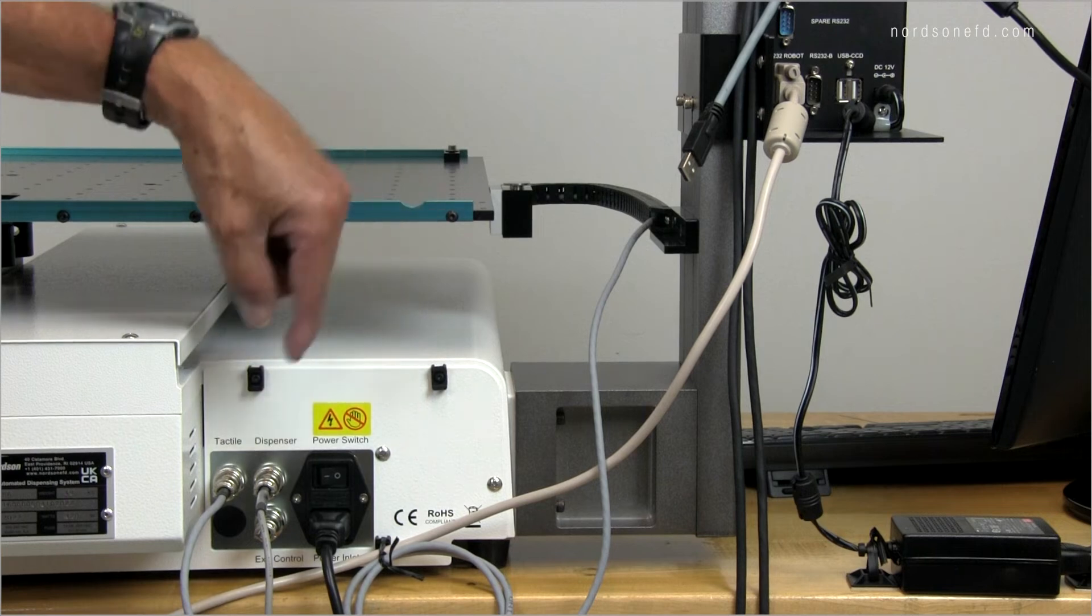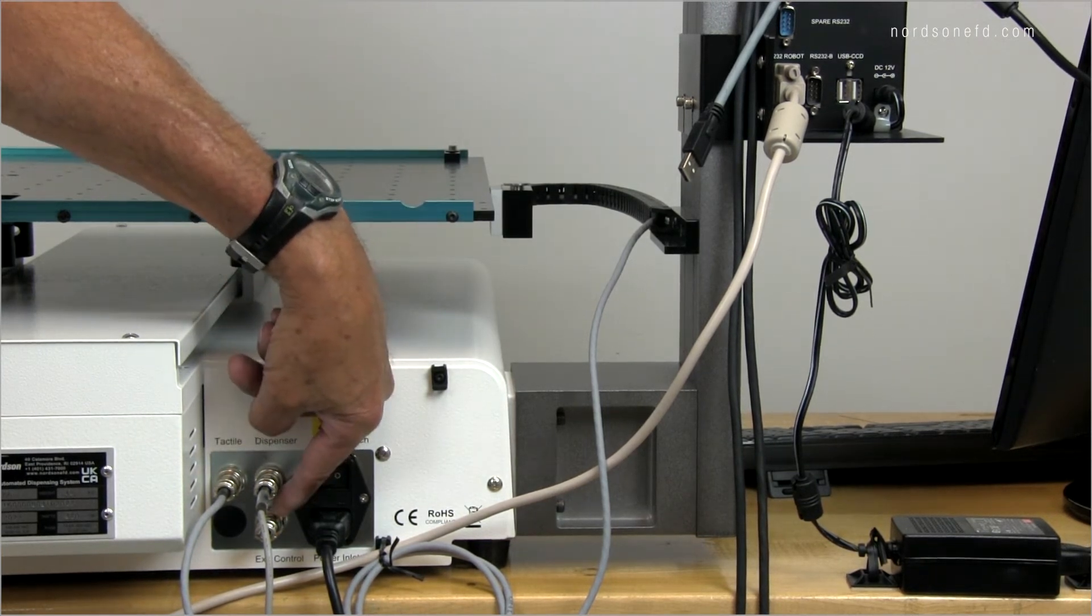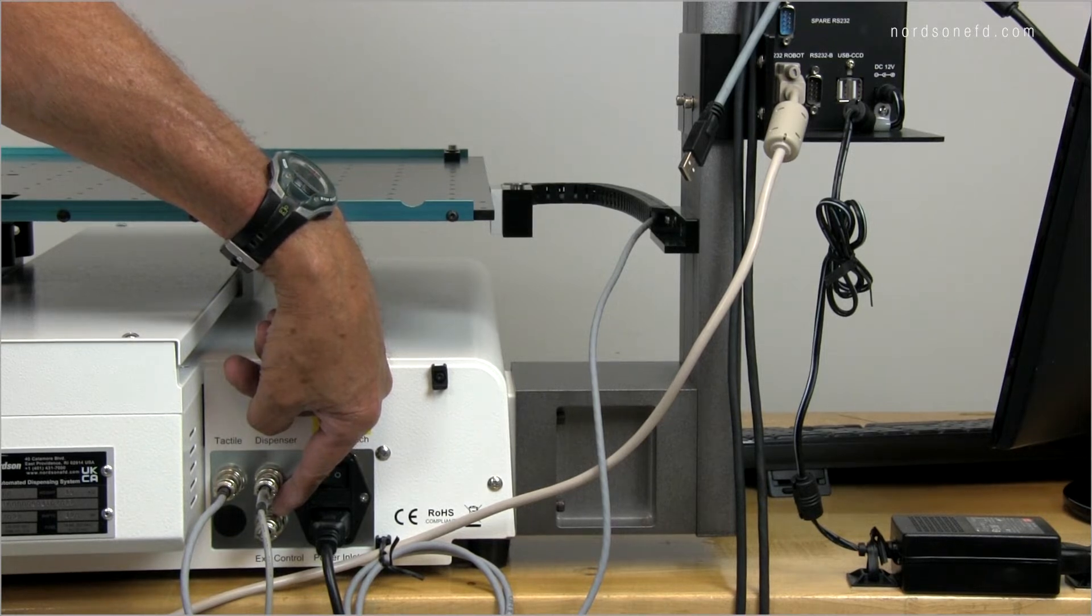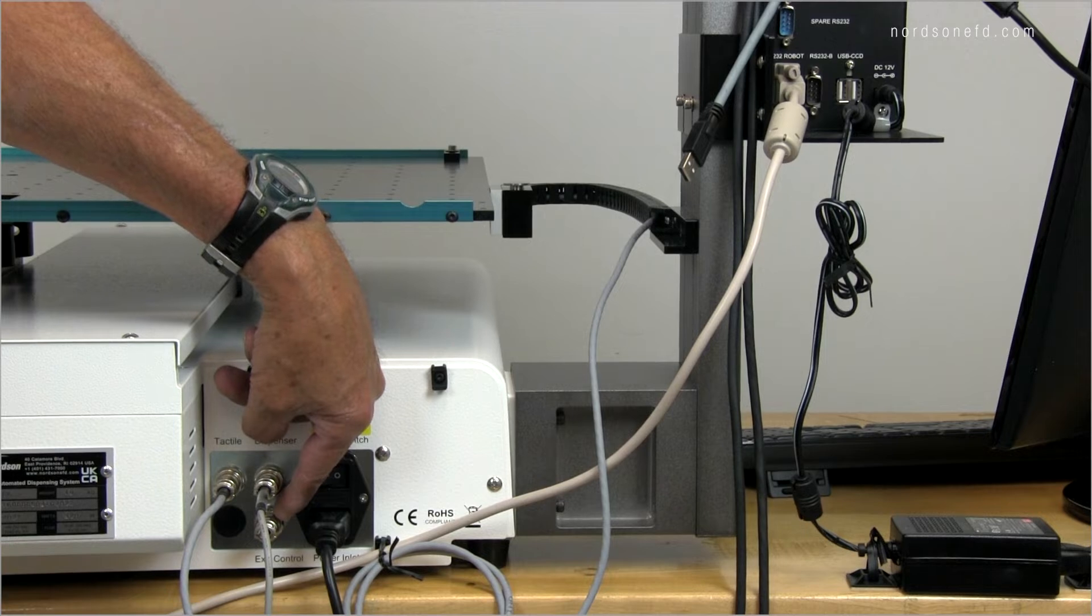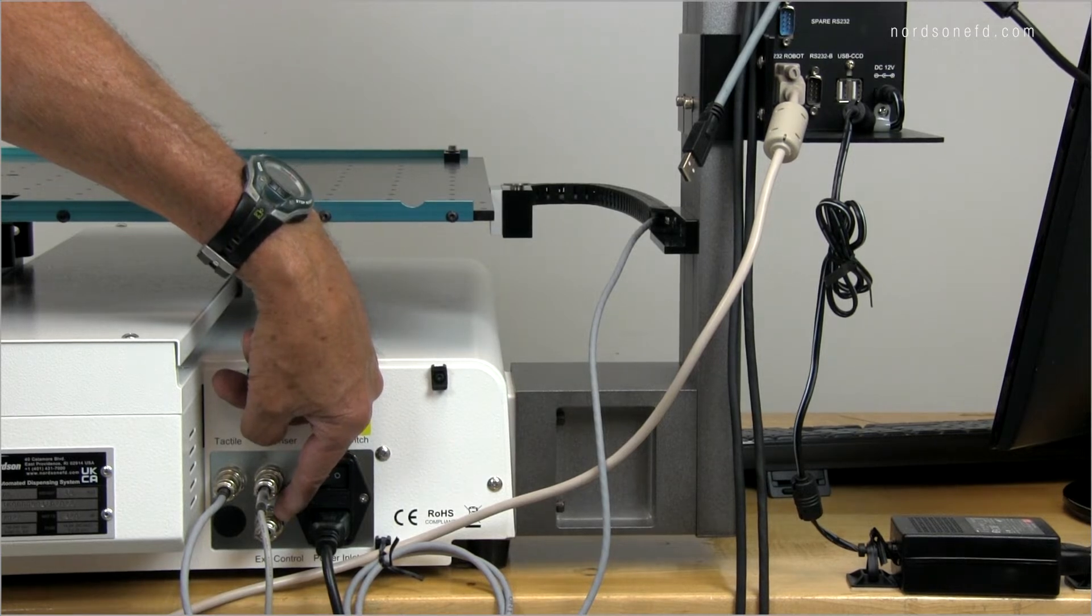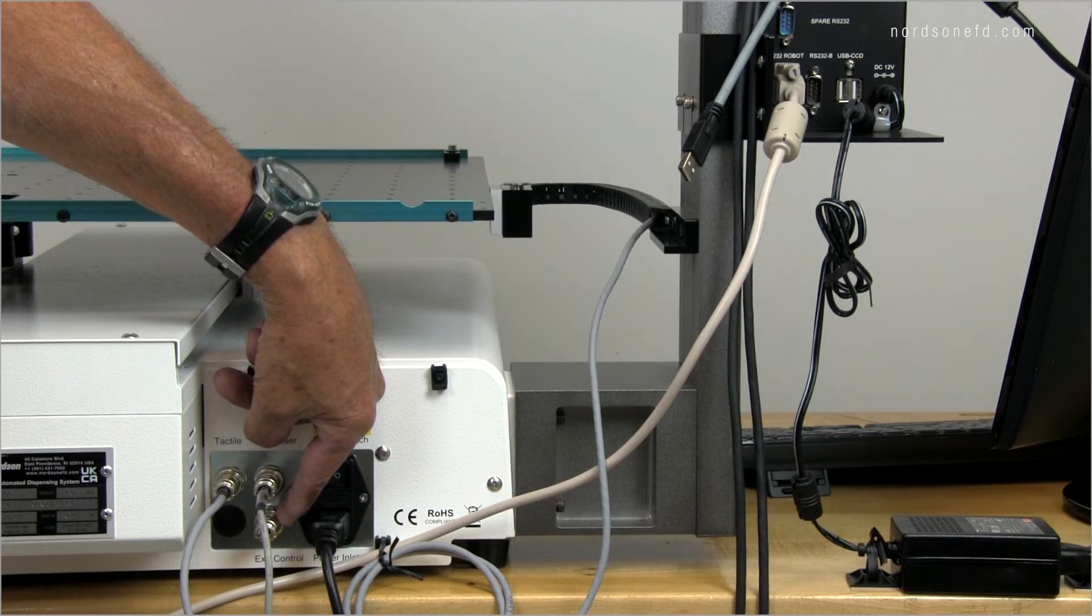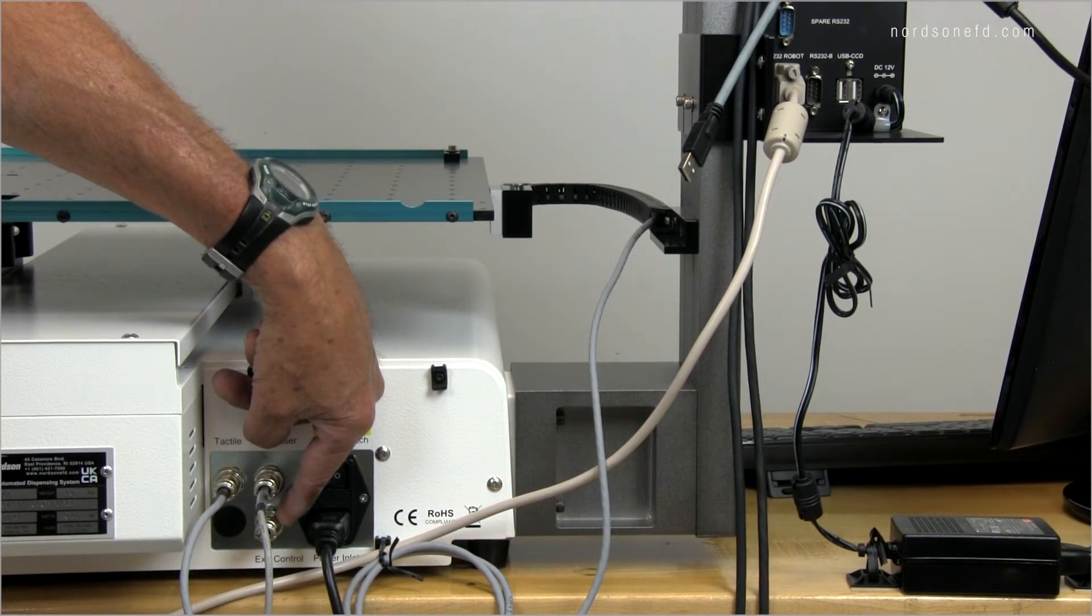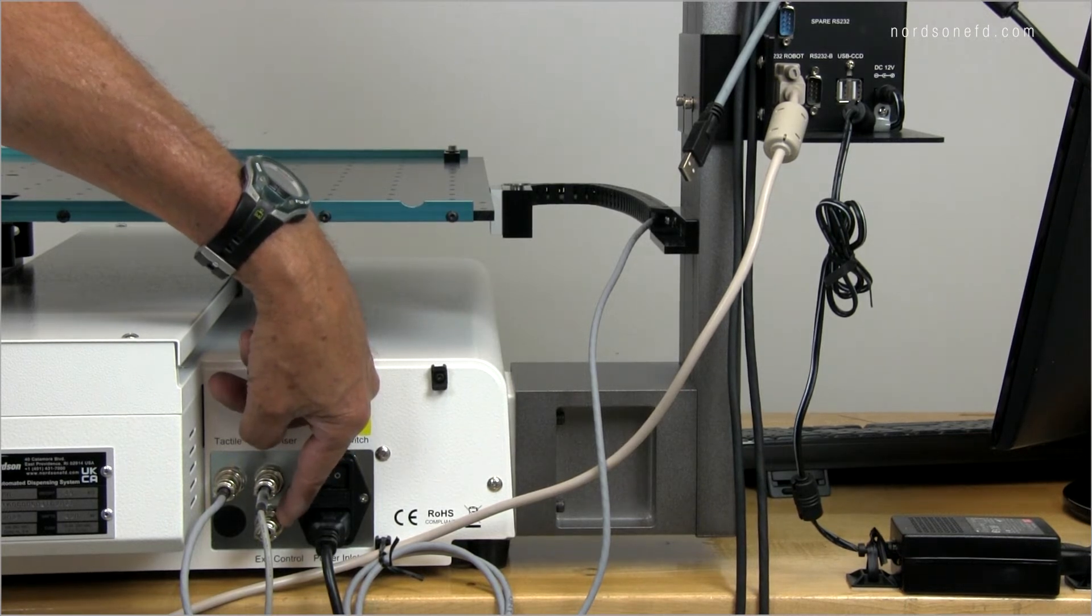And then the most critical of all of these connections is this shorted plug that's plugged into the external control port. This basically is allowing the robot to operate without a safety fence included. Without that shorted plug in place, if you're not using a light curtain or a safety fence and you don't have that shorted plug in place, this robot will not operate. You'll get an error message saying release emergency button whenever the software is running and that connection hasn't been shorted out.